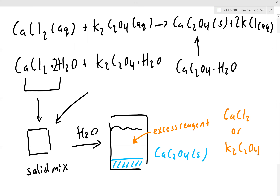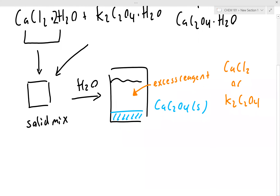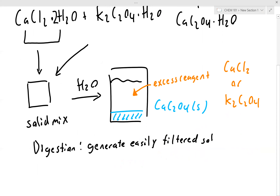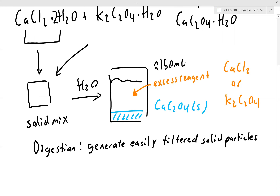There's a very unique feature of calcium oxalate. Can you just dump the solid mixture into water, stir, and call it a day? You have to be a little careful. After you've generated your precipitate, you need to subject it to a process known as digestion. The goal of digestion is to generate easily filtered solid particles. Keep the volume of water to a minimum — the more water you have, the more of your precipitate will dissolve and the less solid you'll be able to isolate.